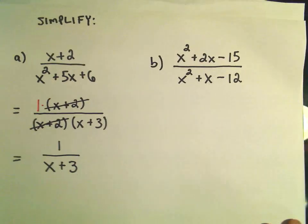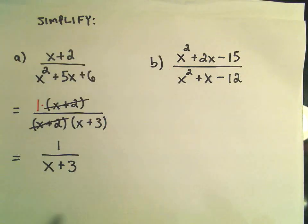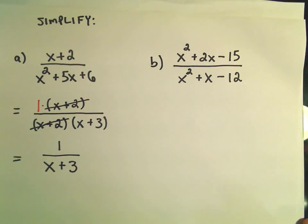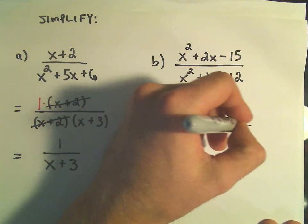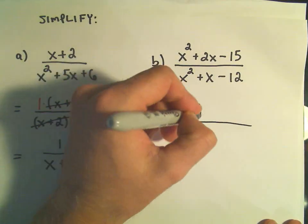And in part b, let's do the same thing. So x squared plus 2x minus 15 over x squared plus x minus 12. Let's try to factor the numerator first.